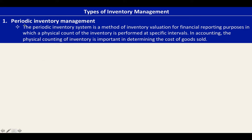The first type is periodic inventory management. The periodic inventory system is a method of inventory valuation for financial reporting purposes in which a physical count of the inventory is performed at specific intervals. Under periodic inventory management, you are doing a physical count of the inventory because in accounting, the physical counting of inventory is important in determining the cost of goods sold.